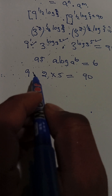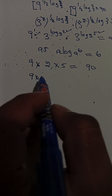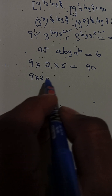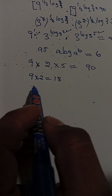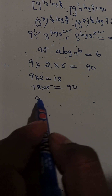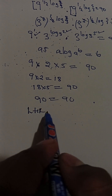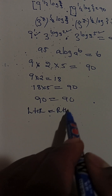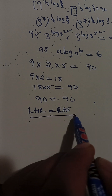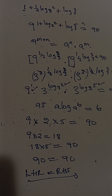9 times 2 is 18, and 18 times 5 is 90. So 90 = 90 — left-hand side equals right-hand side. We are done with our equation.